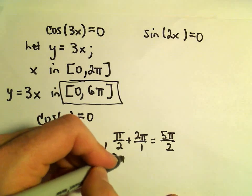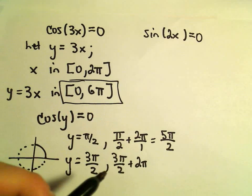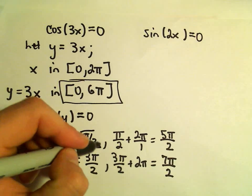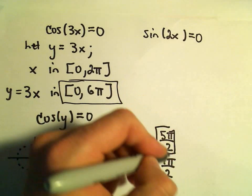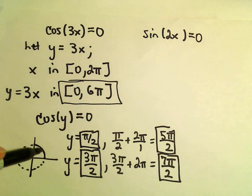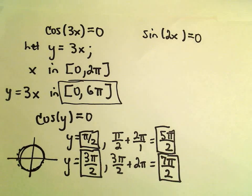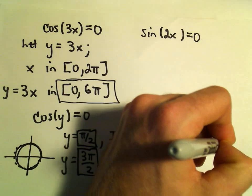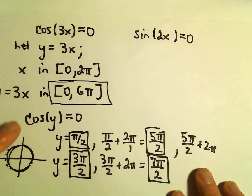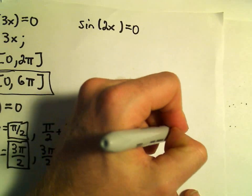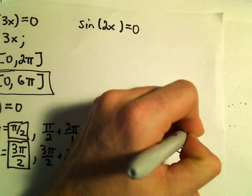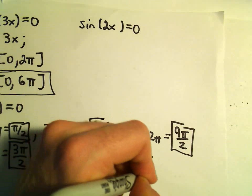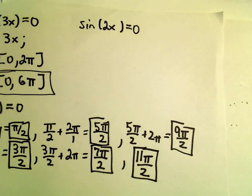Likewise, if we take 3π/2 and add 2π, we'll add 4π/2, which is going to give us 7π/2. So there's 1 solution, 2 solutions, 3 solutions, 4 solutions. But now we've only sort of gone around twice. So we would have to add 2π to these solutions. So if we add 2π, that's going to be 4π/2. So we'll simply get 9π/2 as another solution. And if we add 4π/2, we'll get also 11π/2. Okay, so we've got 6 solutions so far.